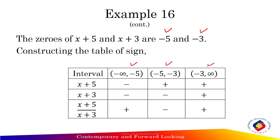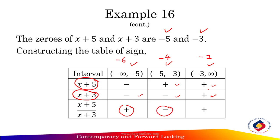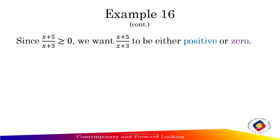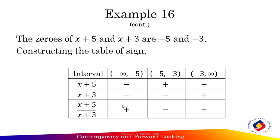Check the sign for the numerator and denominator by substituting test values: choose negative 6 for the first interval, negative 4 for the second, and negative 2 for the third. Substituting into the numerator and denominator gives signs: negative, positive, positive for the numerator and negative, negative, positive for the denominator. The quotient x plus 5 divided by x plus 3 gives positive, negative, and positive signs respectively. Since the inequality is greater than or equal to zero, we want the expression to be either positive or zero.